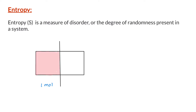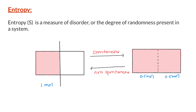Let us assume we have a container divided into two halves: left hand side and the right hand side. The two sides are separated by a partition, and we have one mole of ideal gas on the left hand side while the right hand side is evacuated. When we remove the partition, the gas particles spontaneously expand into the right hand side until there are approximately equal numbers — half a mole on each side. This process of gas expansion into the vacuum is a spontaneous process.